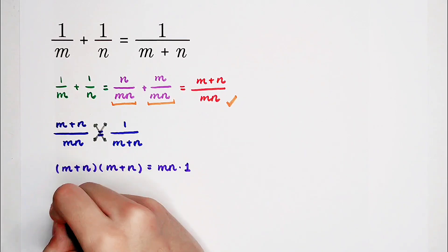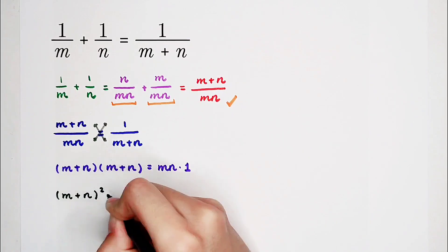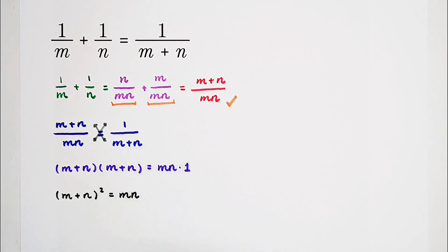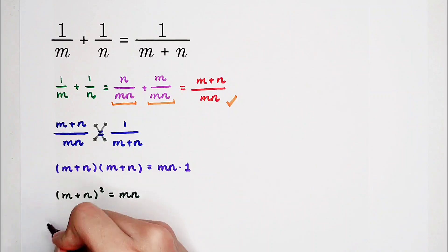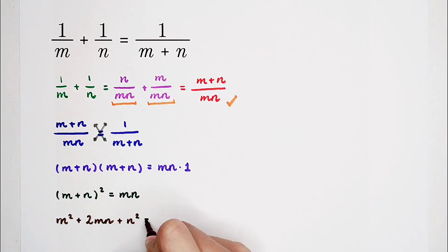So then we can simplify it. The left-hand side is m plus n squared, and the right-hand side is m times n. Now simplify it further. m plus n squared is equal to m squared plus 2 times mn plus n squared, is equal to mn.